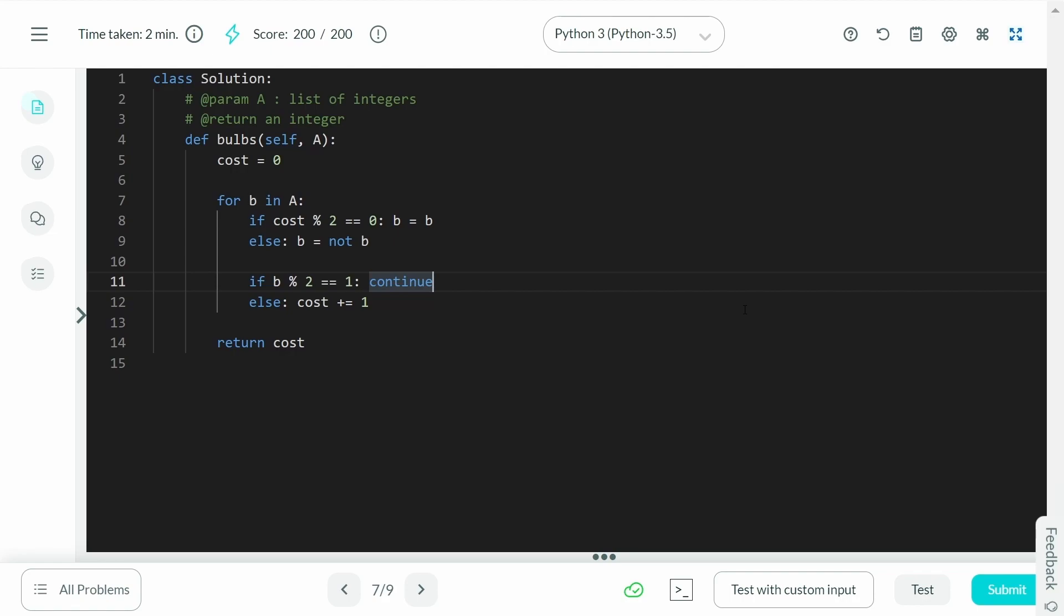And once we are done with this iteration, we finally will have the cost. So, you can realize that this takes order of N time complexity where N is the number of bulbs and it still takes order of 1 space since we are not storing anything other than the cost variable. Alright. So, this is it for the solution to the problem, bulbs on InterviewBit.